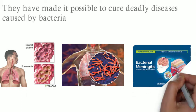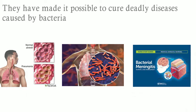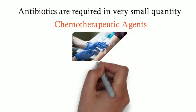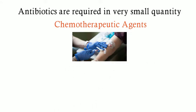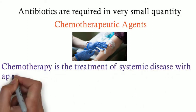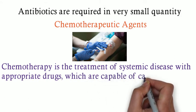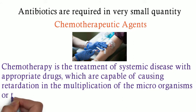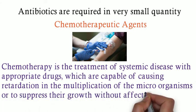Meningitis is caused by both virus and bacteria. The most common type of bacterial meningitis is caused by the bacteria named Streptococcus pneumoniae. Antibiotics are otherwise called chemotherapeutic agents because they are required in very small quantities for prophylaxis or treatment. Chemotherapy is the treatment of systemic disease with a drug that has the capability to retard the multiplication or suppress the growth of microorganisms without affecting the host organism.